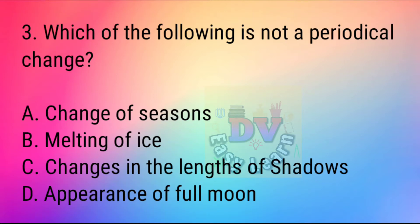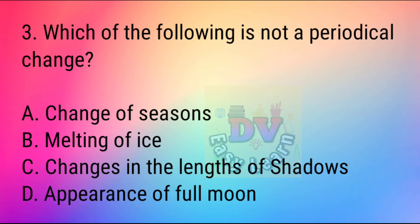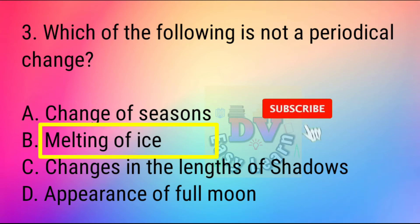Question No. 3: Which of the following is not a periodical change? Correct answer: Melting of ice.